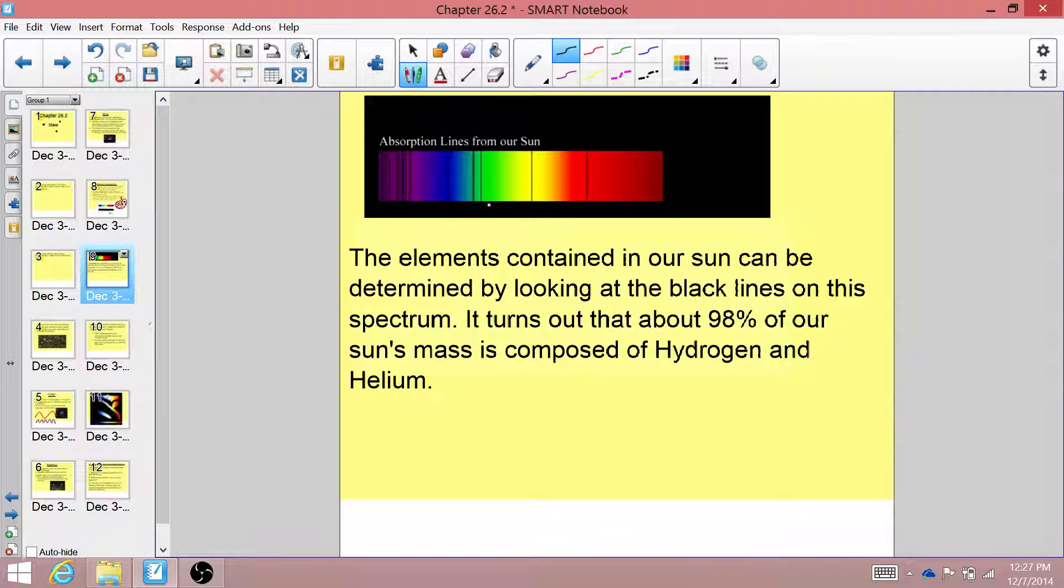And if we look at the absorption lines from our sun, we see a couple bands in the purple, a blue, a teal, and a red. But there are also some other lines here, and those other lines correspond to other elements.